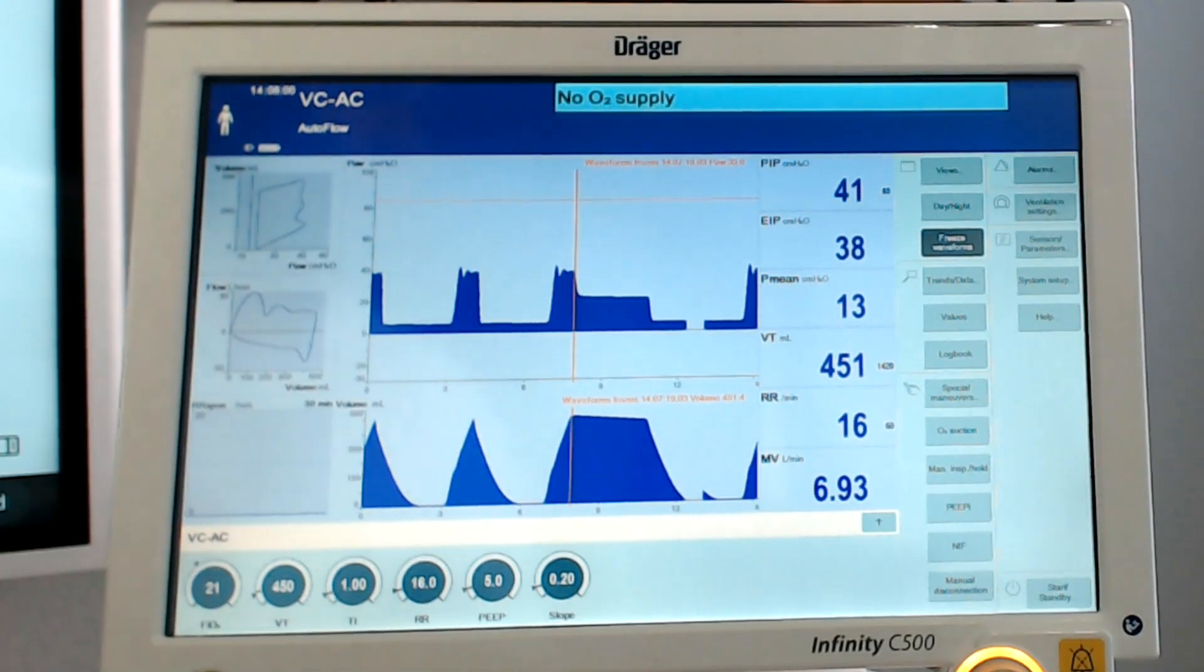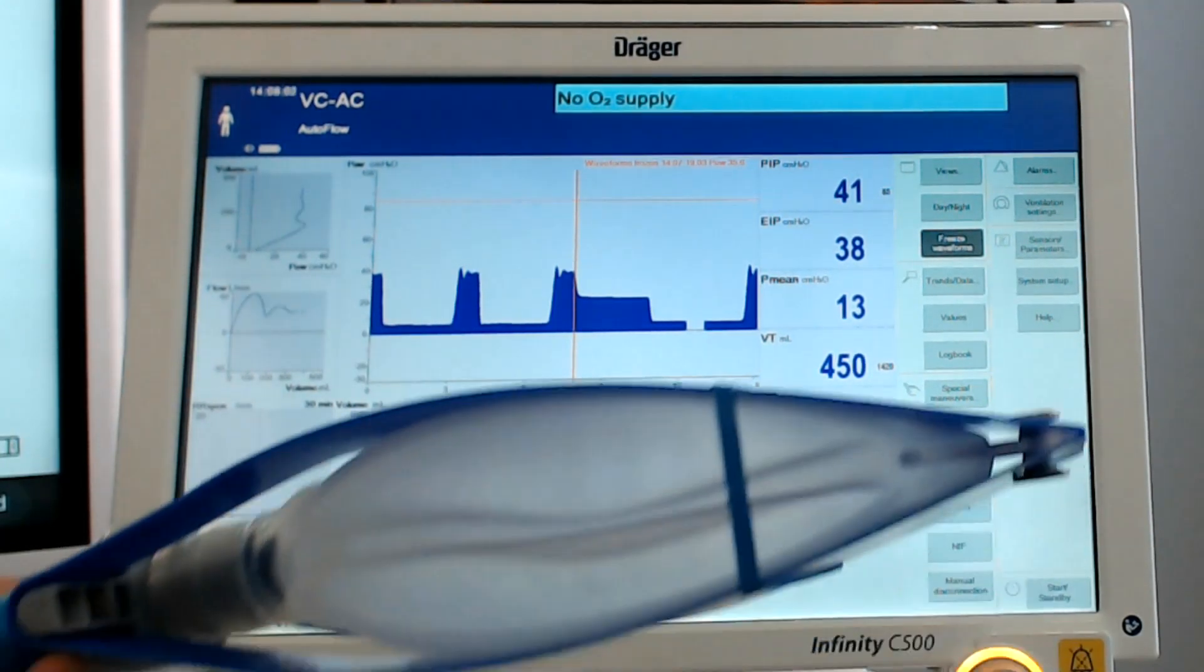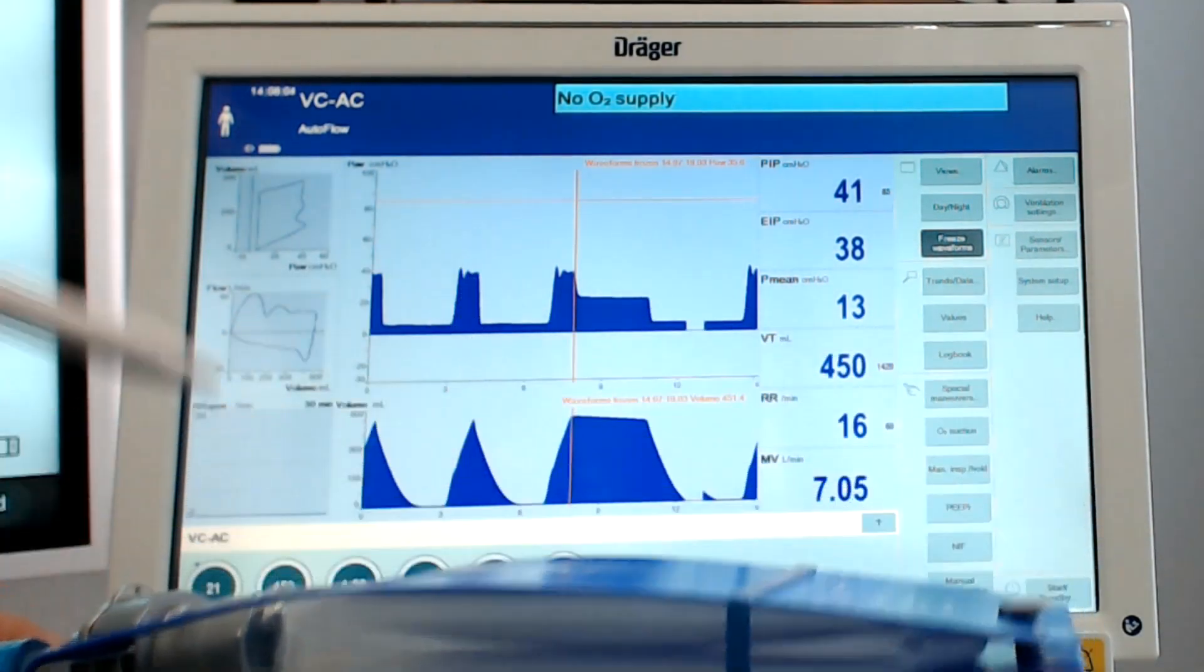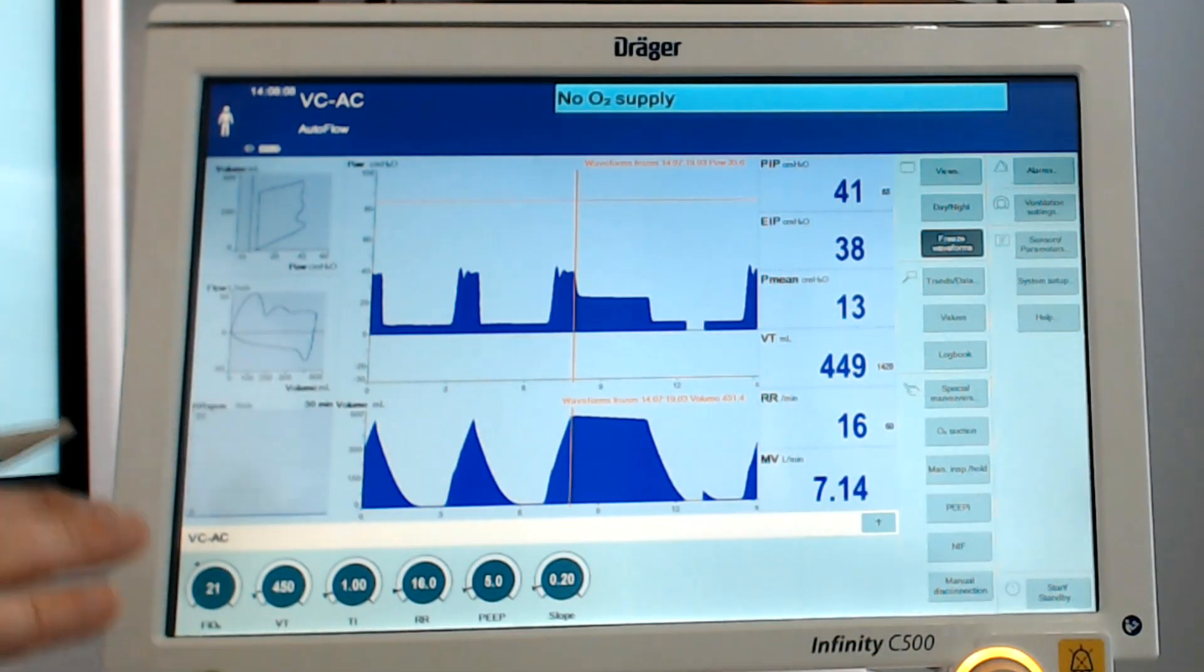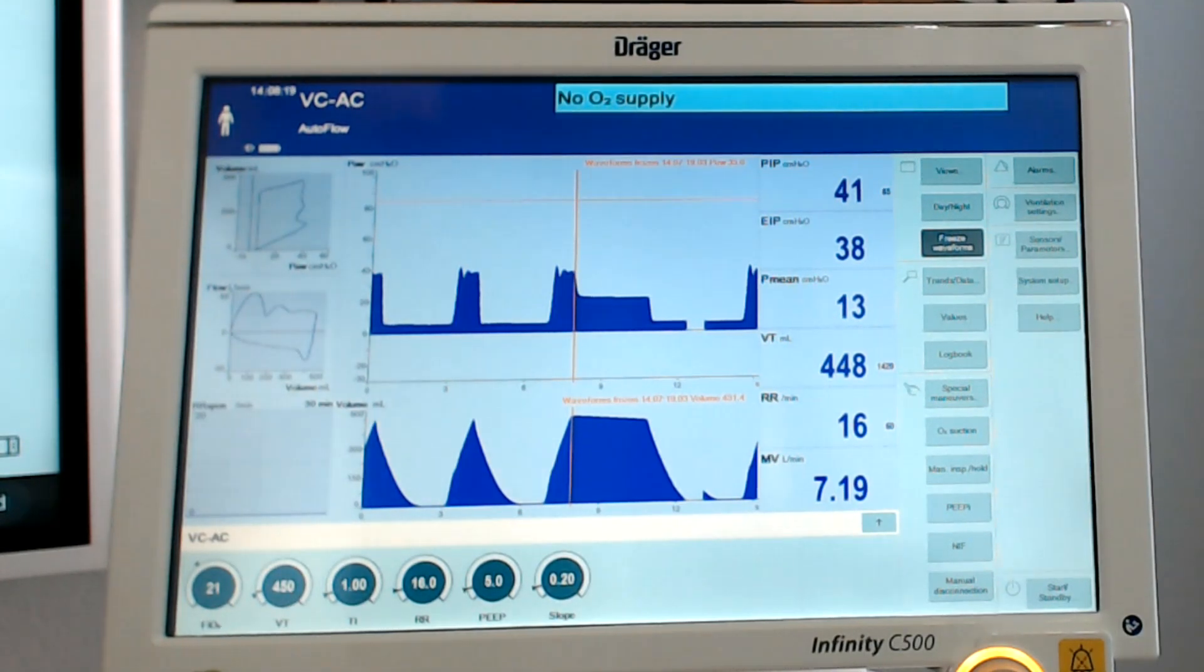All right. So we've collected our data using our test lung. We have the ventilator in a pressure regulated volume control type mode on the Draeger, it's called auto flow, and we have assessed baseline, decreased compliance, increased compliance, as well as increase in airway resistance. I've been collecting the data. Let's go back and look at it and see what stories we can learn from this data that we've collected.